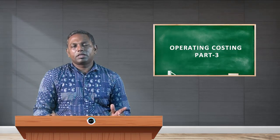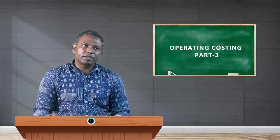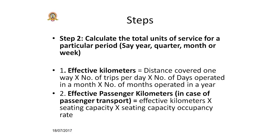The next step is calculating the total units of service for a particular period — per month or per week — that is the total number of kilometers run by the transportation company. To calculate total effective kilometers, use this formula: distance covered one way multiplied by number of trips per day, multiplied by number of days operated in a month, multiplied by number of months operated in a year.